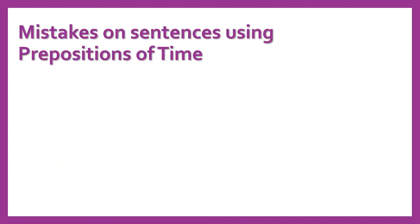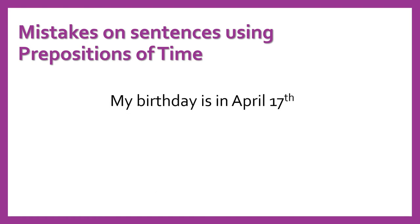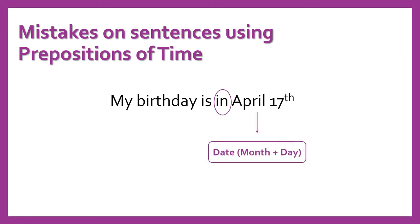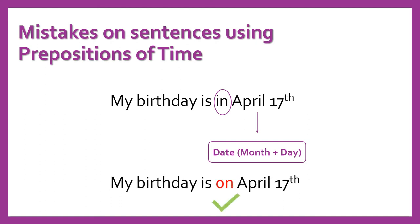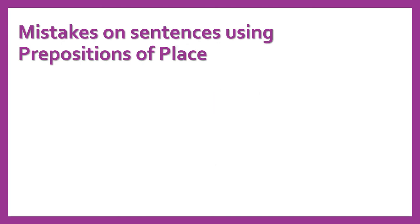In the first case, we're going to talk about mistakes on sentences using prepositions of time. For example, the sentence 'My birthday is in April 17th.' The mistake is on the preposition 'in' because we're talking about a date — a month plus a day. So the correct sentence will be 'My birthday is on April 17th.'